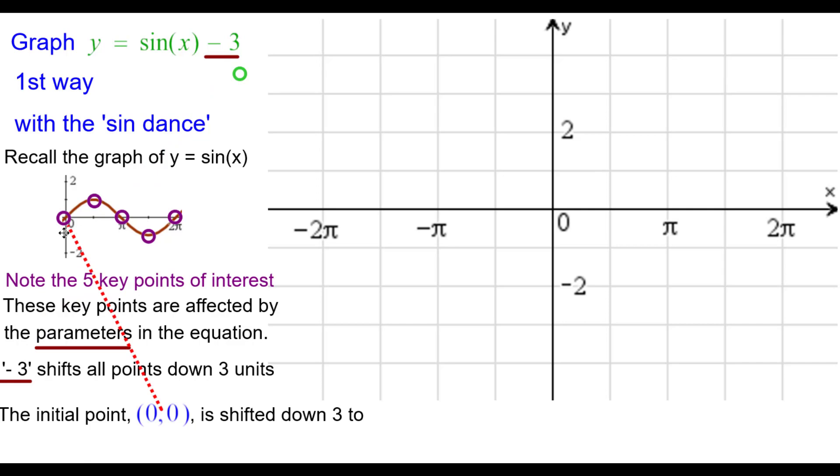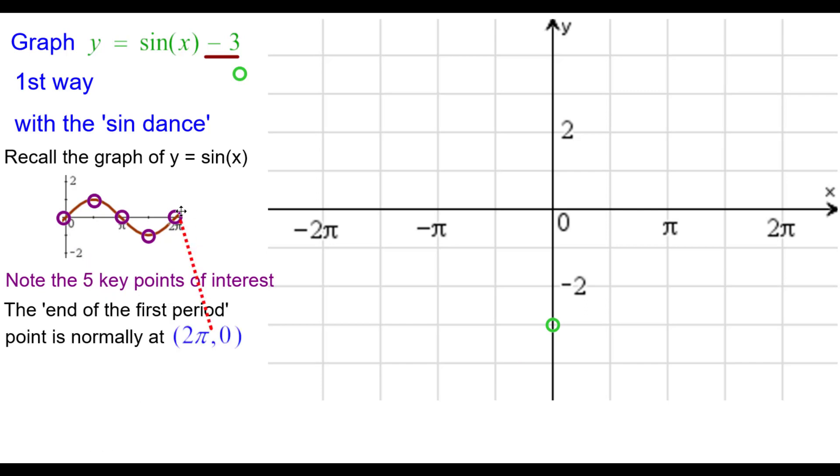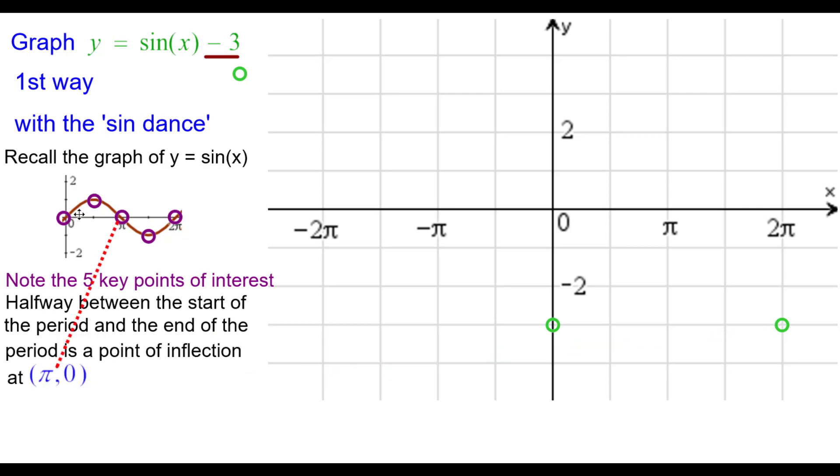The initial point, a point of inflection, normally starts at the origin 0, 0. But since we're shifting that down 3, it's going to be at 0, negative 3. So we'll plot that point. At the end of the first period, normally at 2 pi, 0, but we're shifting that down 3 units to 2 pi, negative 3. Halfway between those two points is another point of inflection, normally at pi, 0. It shifted down 3 to pi, negative 3.